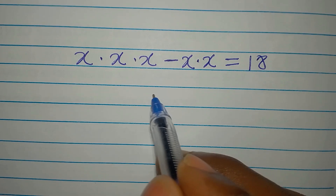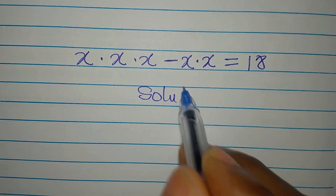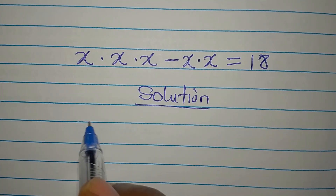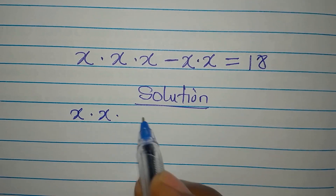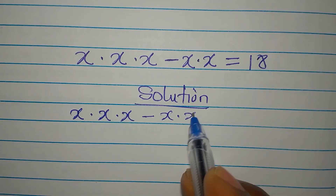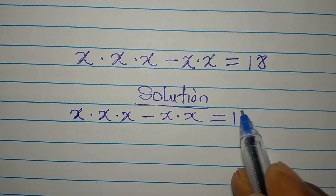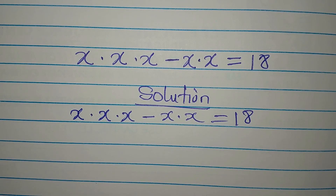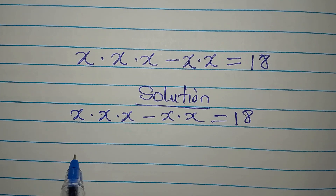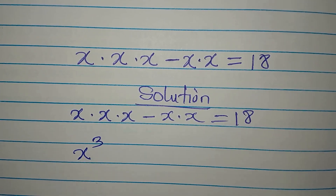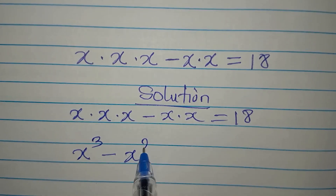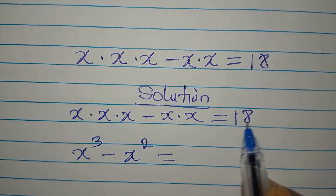Let's solve this problem right away. We have x times x times x minus x times x equals 18. So x times x times x gives us x to the power of 3, minus x times x is x squared, and this is equal to 18.